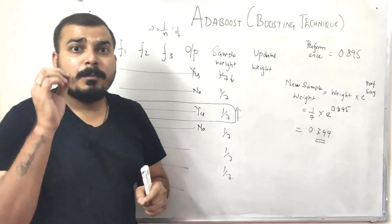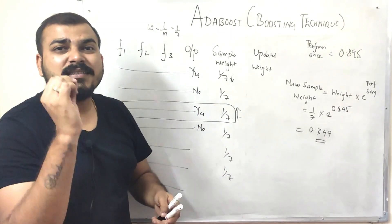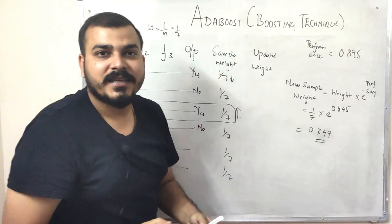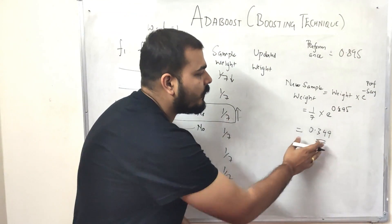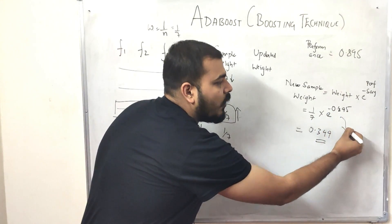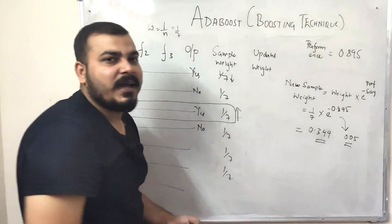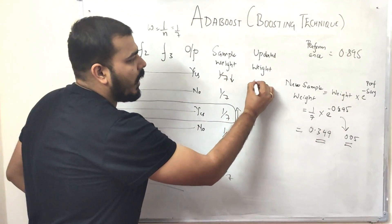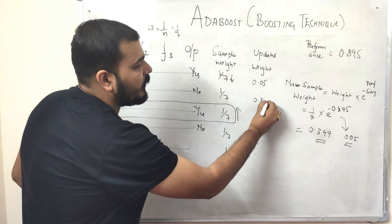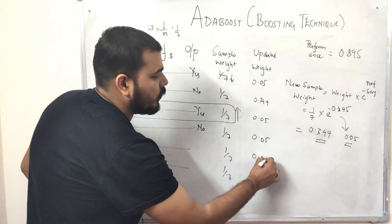For updating the correctly classified points, we make a simple change: the formula becomes old weight × e^(−performance). Using −0.895, the output is approximately 0.05. So the updated weights now look like: 0.05 for correctly classified records and 0.349 for the incorrectly classified record.